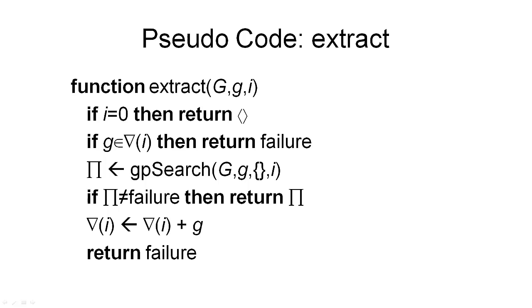Okay, now it's time to put all this into pseudocode. And this is the first of two functions that we will define to perform the backwards search. The function extract takes three parameters. The first parameter, capital G, is the planning graph that we've generated through our forward expansion mechanism.